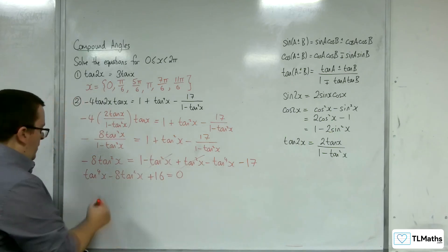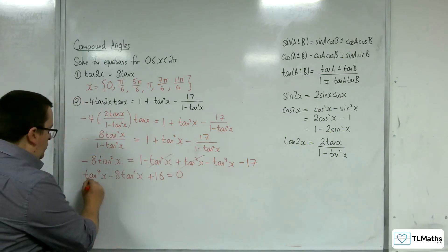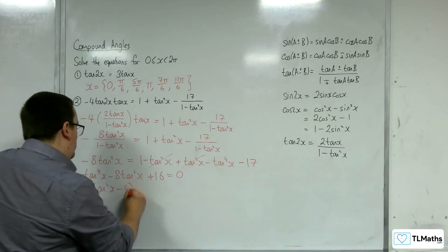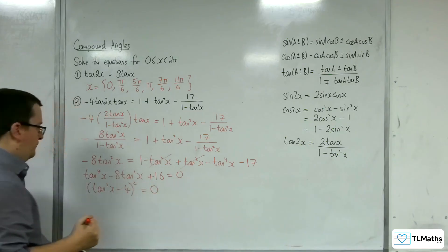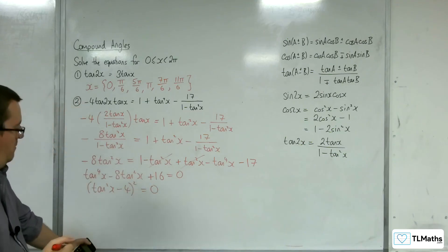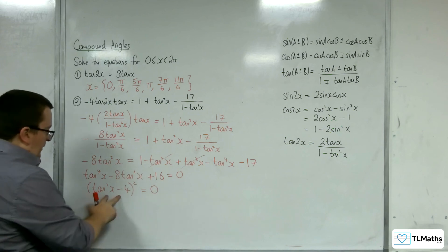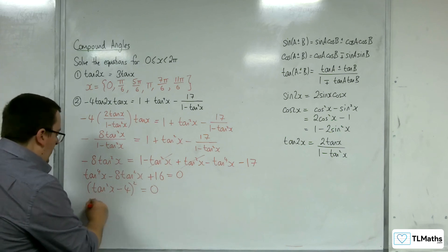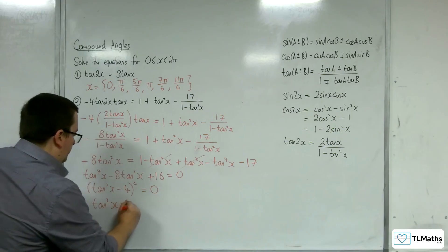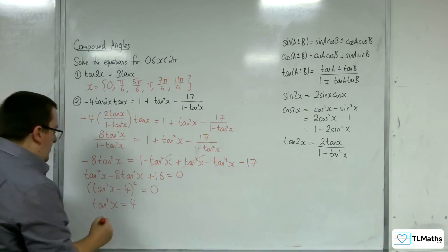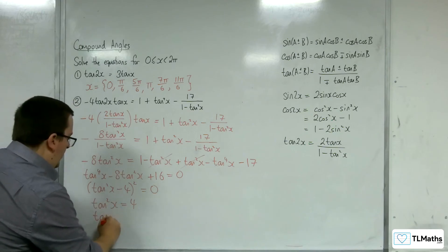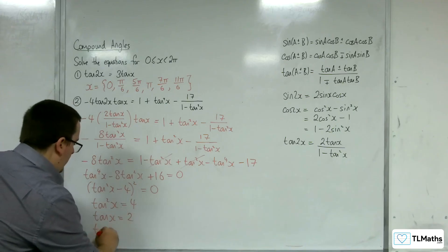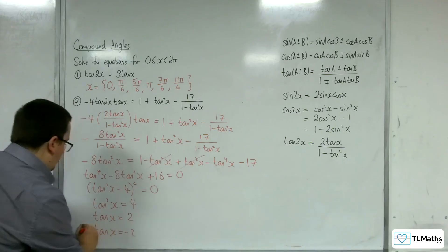So we've now got a hidden quadratic, because this factorises neatly. This is tan squared take away 4, all squared, equals 0. So that means that tan squared must be equal to 4, and that means either tan x is equal to 2 or tan x is equal to negative 2.